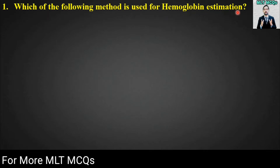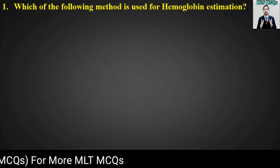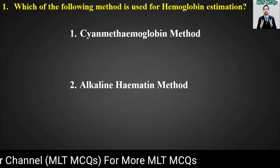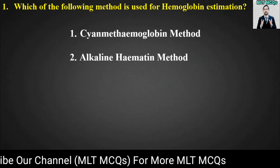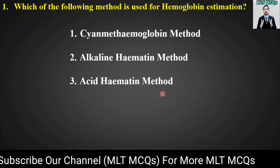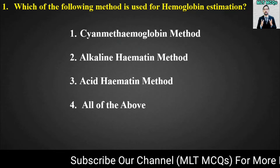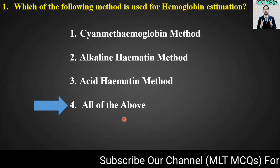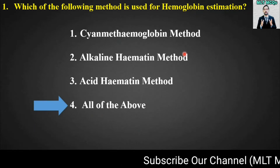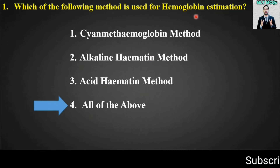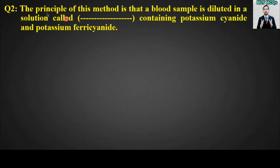MCQ number one: Which of the following methods is used for hemoglobin estimation? Options are: cyanmethemoglobin method, alkaline haematine method, acid haematine method, or all of the above. The right answer is option number four — all of the above. Cyanmethemoglobin, alkaline haematine, and acid haematine methods are all used for hemoglobin estimation.